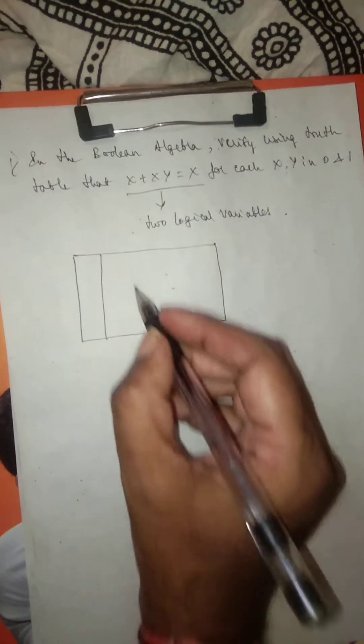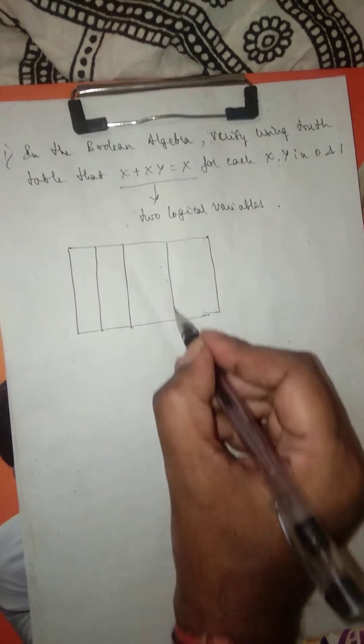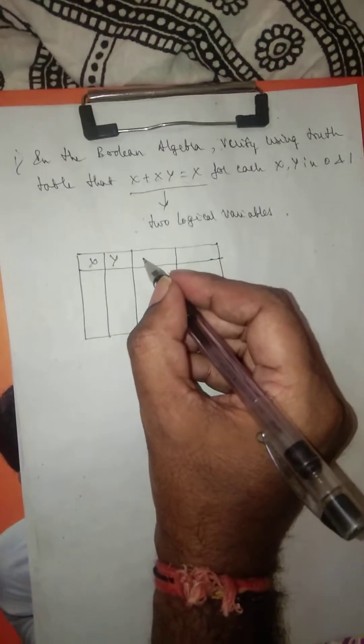In order to do so, first we need to understand how many variables are there in this particular Boolean algebra. There are actually two logical variables. So what I will do is prepare a table — I need to write the table values here.